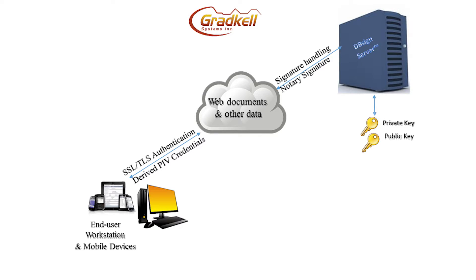This opens the door to use mobile devices and to move beyond smart cards. To acquire derived PIV credentials, end users insert their CAC or PIV cards at their workstation to authenticate to a credential issuance website. On the basis of that authentication, derived credentials are issued to them. Then they install a special app on their mobile device to load their derived credentials.